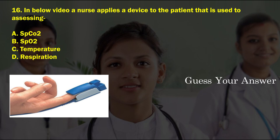In the below image, a nurse applies a device to the patient that is used for assessing — option A: SpCO2, option B: SpO2, option C: temperature, option D: respiration. The correct answer is option B, SpO2.